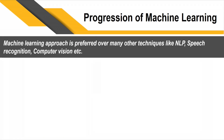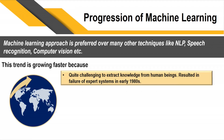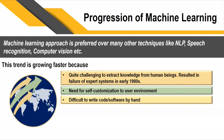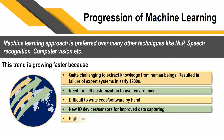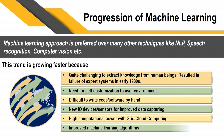Machine learning has progressed greatly and is preferred over techniques like NLP, speech recognition, and computer vision. Extracting knowledge from human experts is challenging, and the failure of expert systems in the early 1980s created demand for self-customizing systems. Writing code by hand is difficult. New sensors and IoT devices provide improved data capture, giving us large volumes of data. High computational power through grid and cloud computing, along with improved ML algorithms, make deployment feasible.